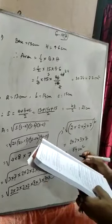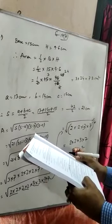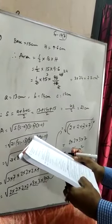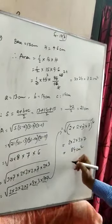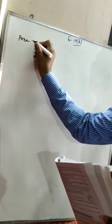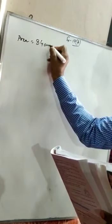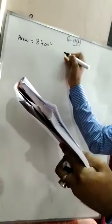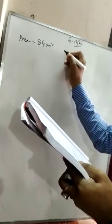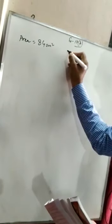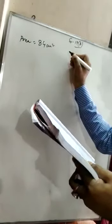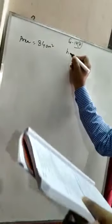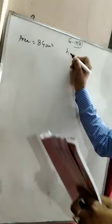Next, they also ask: find the height of the triangle corresponding to the longest side. We have already found the area as 84 cm square. Among the three sides 13, 14, and 15, the longest side is 15 cm. So we have to use the longest side as the base. Base equal to 15 centimeter.